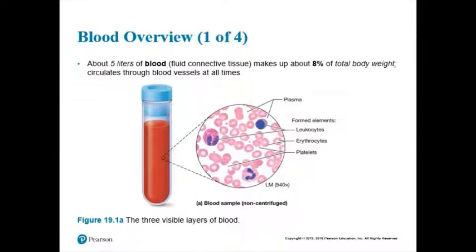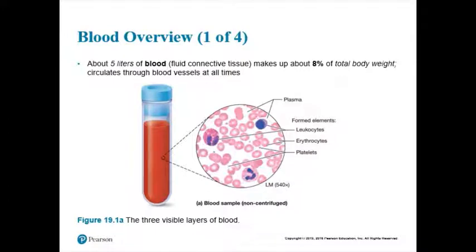When you looked at blood, there are really three major groups of cells that we find in blood. These cells are what we call your formed elements. When you're looking at blood, you're looking at the formed elements — the cells — plus their liquid environment. The cells are called the formed elements, and they're kind of floating in a liquid. That liquid is the extracellular matrix, the environment around the cells. We call it plasma.